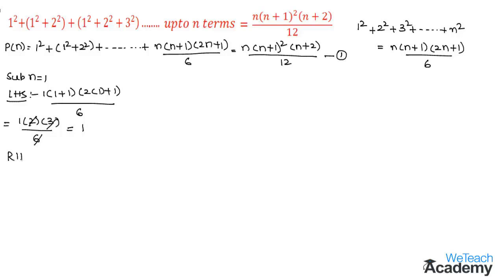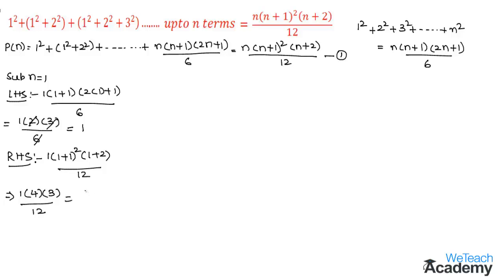Now substituting n = 1 in the RHS: 1·(1+1)²·(1+2) divided by 12 = 1 × 4 × 3 divided by 12 = 12/12 = 1. Since LHS = RHS = 1, we conclude that P(1) is true.